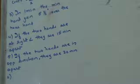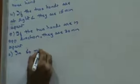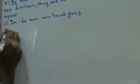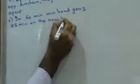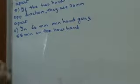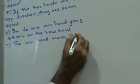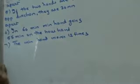Next, in 60 minutes, the minute hand gains 55 minutes on the hour hand. The minute hand moves 12 times as fast as the hour hand.